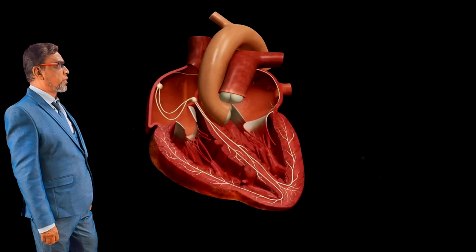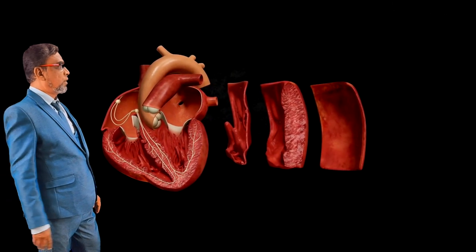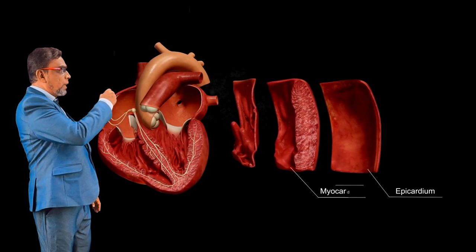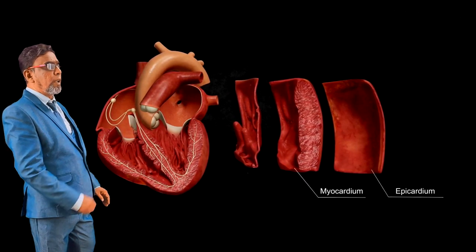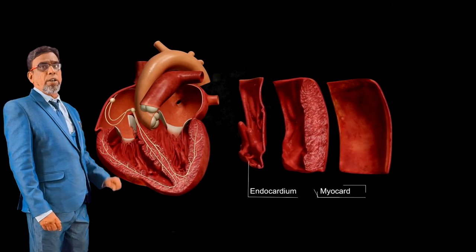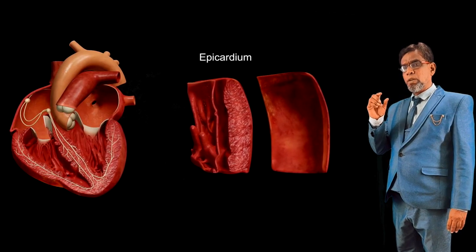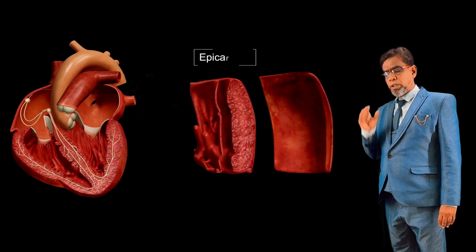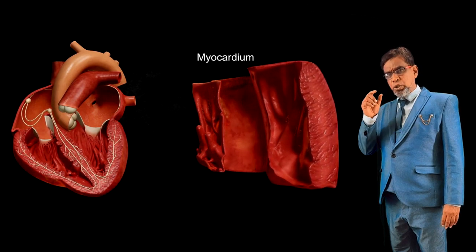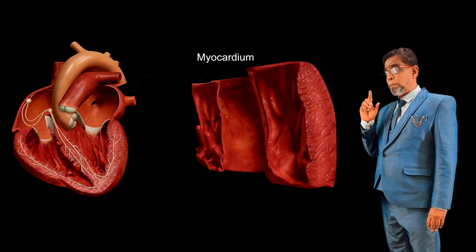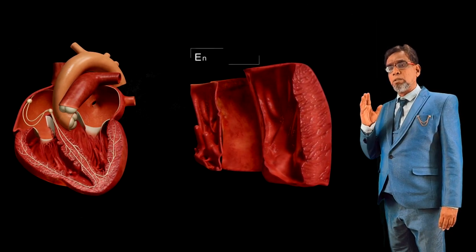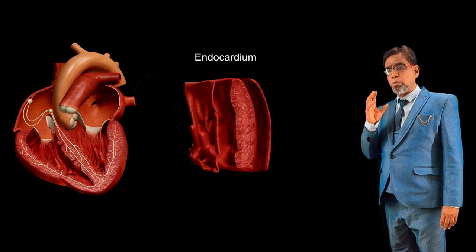The heart is made up of three layers. The outermost is called the epicardium. The middle layer is called the myocardium. The innermost layer is called the endocardium. The epicardium provides protection to the heart, whereas the myocardium is elastic in nature and gives a permanent shape to the heart. The endocardium is a smooth muscle.